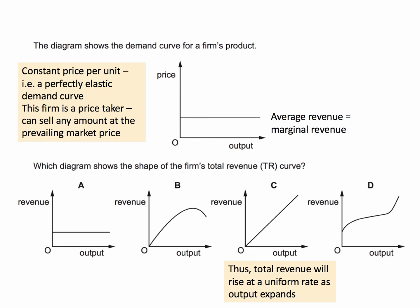This is the key relationship between average and total revenue. When a firm has a downward sloping demand curve, then marginal revenue diverges from average, and total revenue will rise and then eventually fall, which would be option B. But this question tests your understanding of a perfectly elastic demand curve.